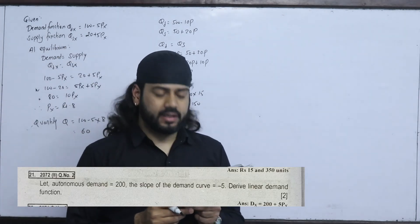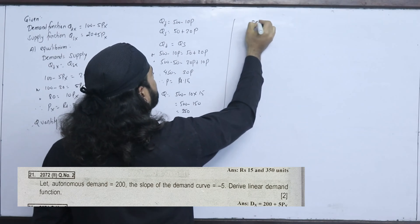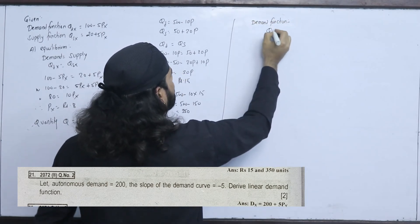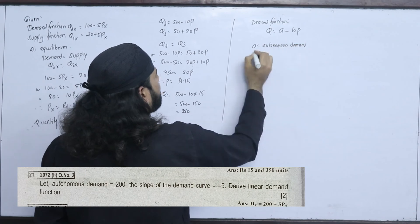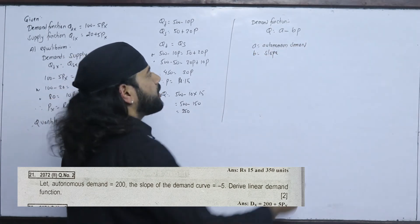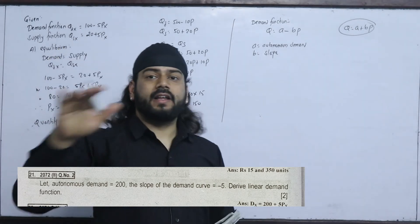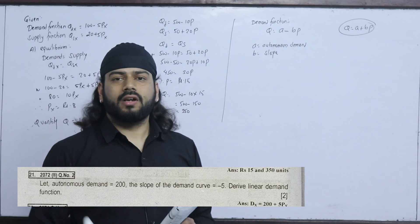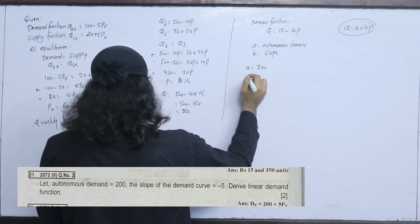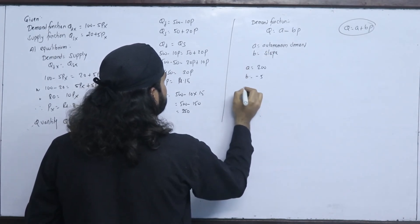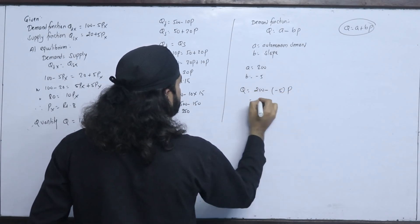Let autonomous demand be 200 and slope of demand be minus 5. Determine the linear demand function. The demand function has a negative slope and takes the form Q = A - BP, where A is autonomous demand and B is the slope. So the demand function is Q = 200 - 5P. The supply function takes the form Q = A + BP.